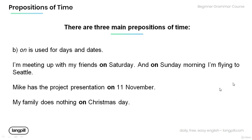B: 'On.' 'On' is used for days and dates. Have a look at the examples below: I'm meeting up with my friends on Saturday, and on Sunday morning I'm flying to Seattle. In these sentences, the prepositions of time 'on' are used for days — Saturday and Sunday. And in this sentence: Mike has the project presentation on 11th November. The preposition of time 'on' is used for the date, 11th November.